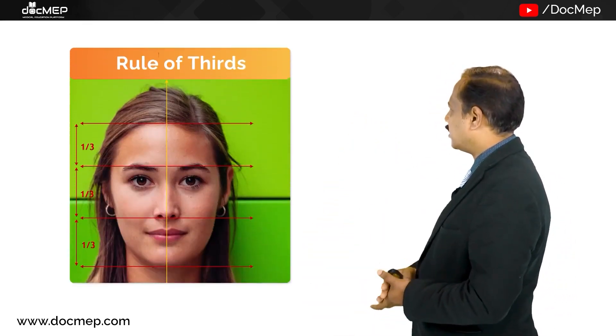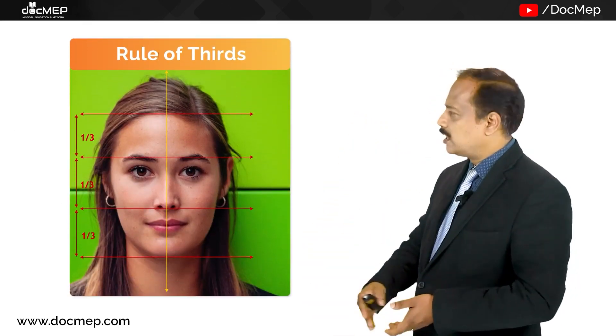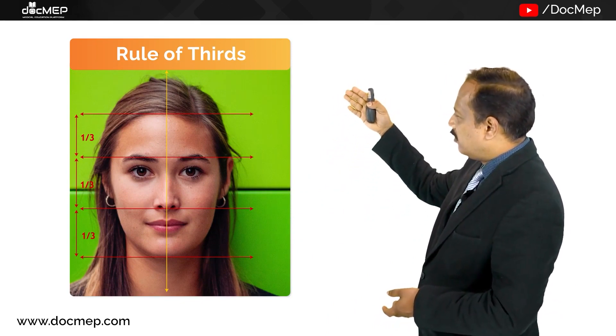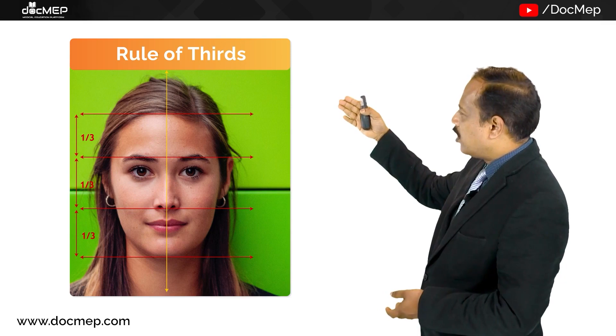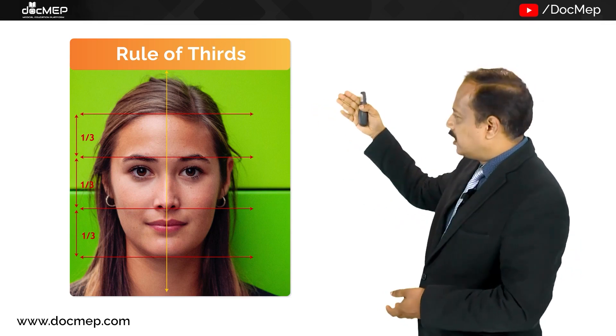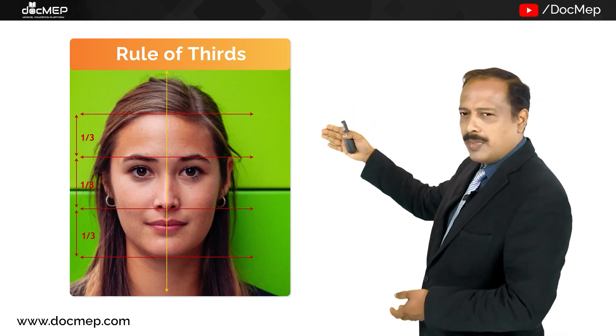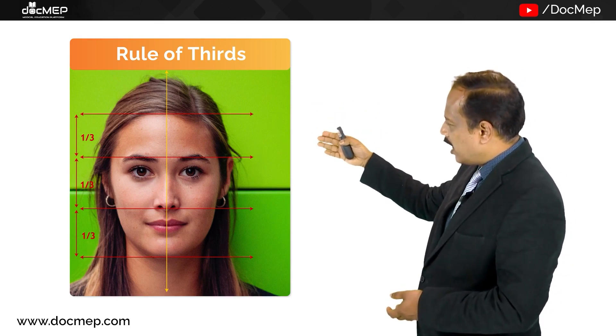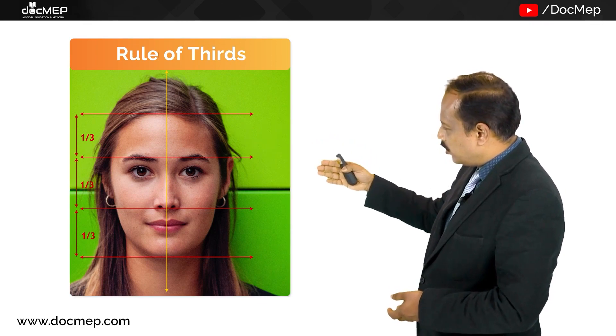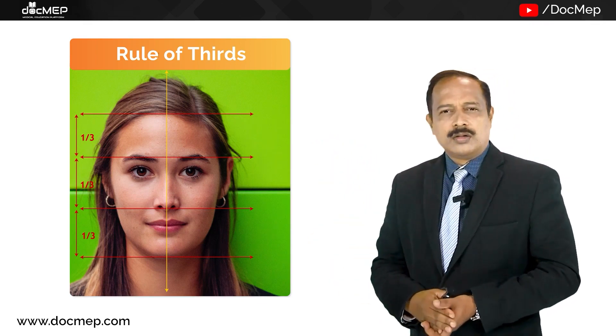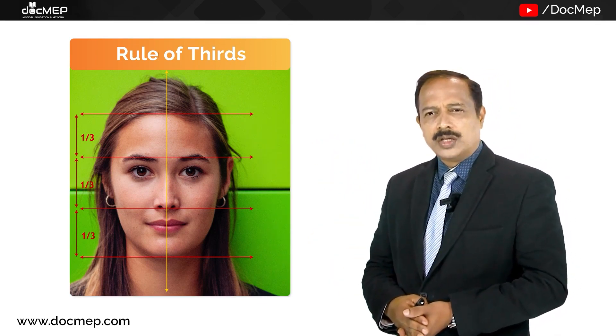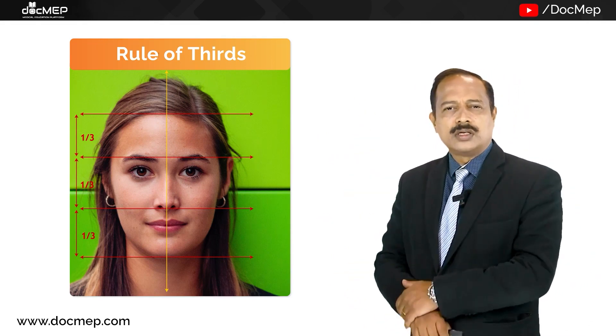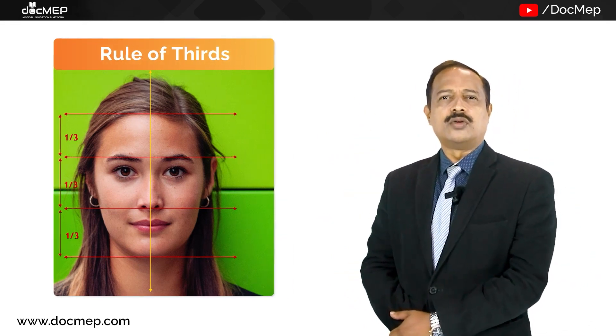The first one is rule of thirds. Now as you can see in the picture, it is the level from the trichion, that is your hairline, till the glabella, from the glabella till the nasion subnasal, and from the subnasal to your lowest portion of the chin. Now these three have to form equal thirds and this is what is the rule of thirds.